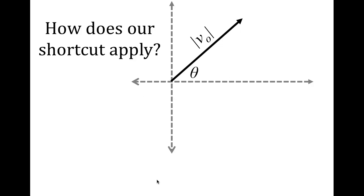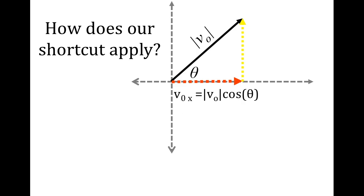So how does our shortcut apply? If this is the angle and this is the initial speed — some V-naught — the x component is the velocity in the x direction, which equals the speed times cosine of the angle. The initial velocity in the y direction is the speed times sine of the angle, because y is the opposite side and x is the adjacent side in this configuration.